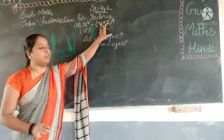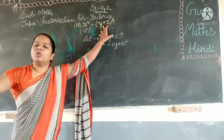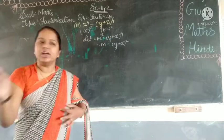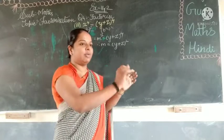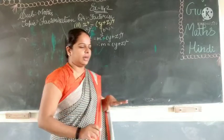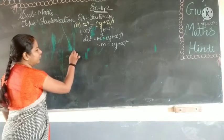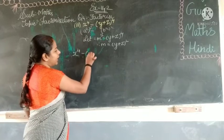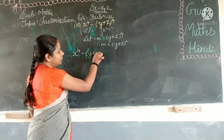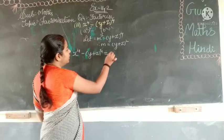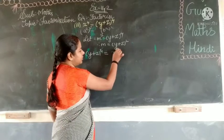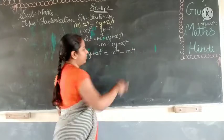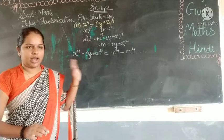With the help of it, wherever the place value comes y plus z, there we are going to write m. At last once the m value is distributed, then we will be writing the exact value. So once again you write the question: x to the power of 4 minus y plus z, the whole square to the power of 4 is equal to x to the power of 4 minus m to the power of 4.